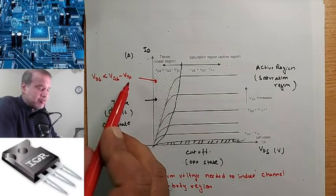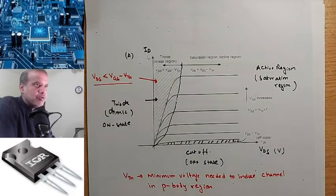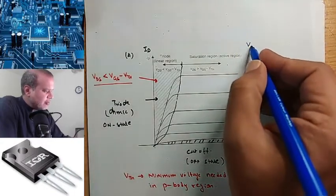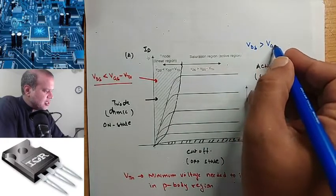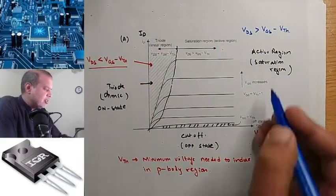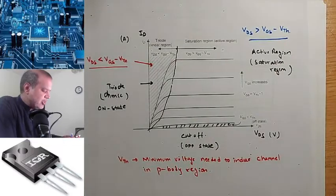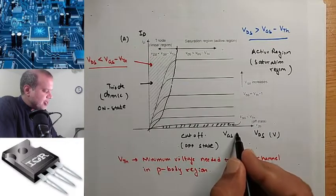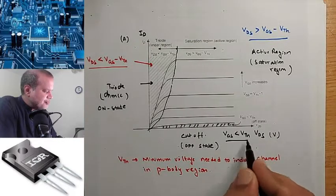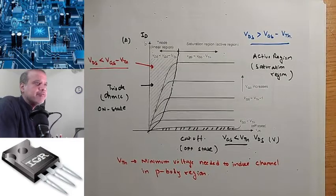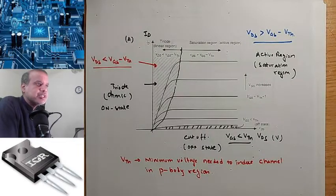If VDS is less than VGS minus Vth, then you are in the ohmic region. In the active region, VDS is greater than VGS minus Vth. The third region is cut-off: VGS is less than Vth.